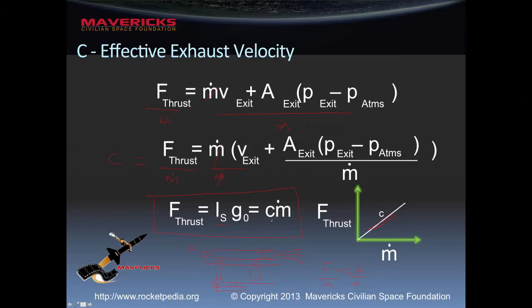That effective velocity ultimately is going to be the ideal velocity that we could ever get the rocket itself to go. So this is another way of thinking about velocity in terms we can measure — we can't always measure the exit of all the molecules coming out of the gas, but we can measure it indirectly through areas, pressures, and mass flow rate. It's a useful tool we'll use later as we develop our own rocket motors.